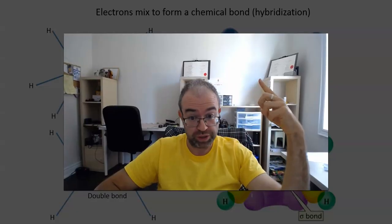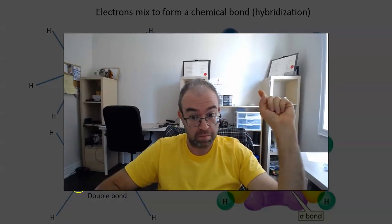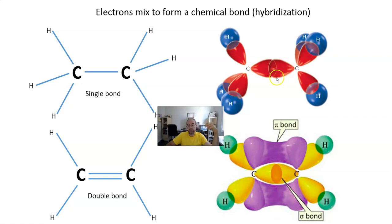My name is Greg and this is a short video about a single pi bond. Two electrons, one from each carbon, mix and form a chemical bond.